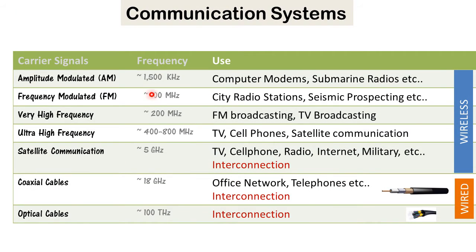Amplitude modulated waves operate at a frequency of about 1.5 megahertz, or 1,500 kilohertz, and are typically used for communication in computer modems and submarine radios. Frequency modulated waves operate in the region of about 100 megahertz and are used for transmission in city radio stations and seismic prospecting.